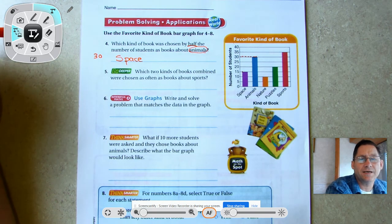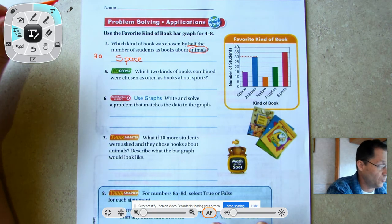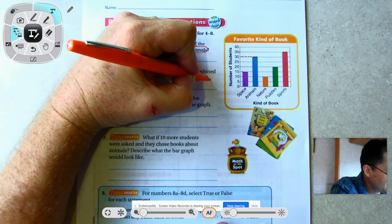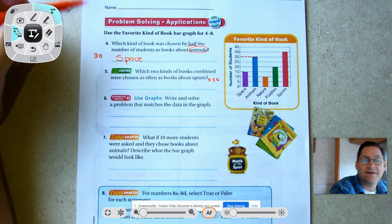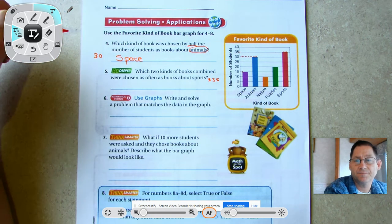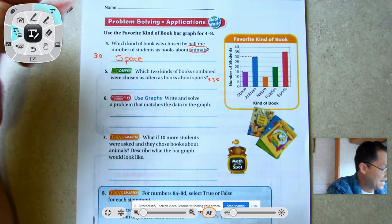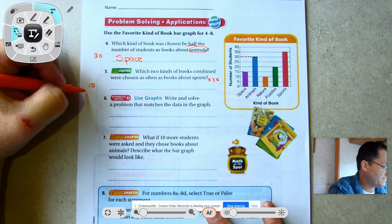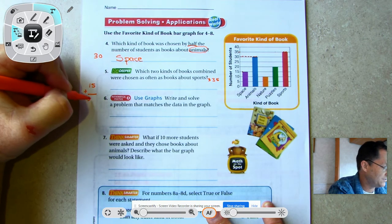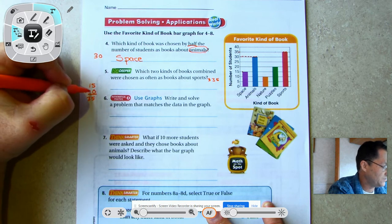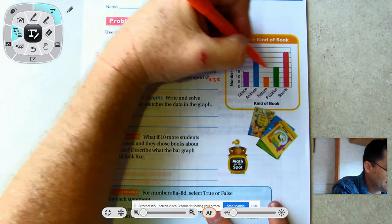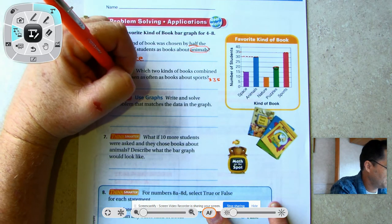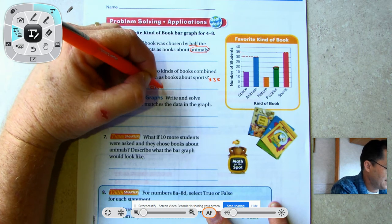Which two books combined were chosen as often as books about sports? Sports was chosen 35 times, so I got to find two books that when added together give me 35. Adding 15 plus something sounds reasonable - 15 plus what is 35? Five plus nothing, one plus two - so I'm looking for 20. Is there a book that has 20? Yes, puzzles. Puzzles and space.